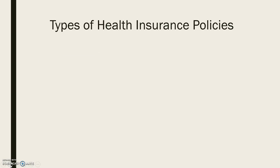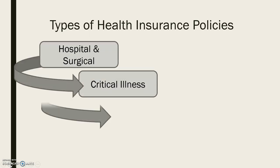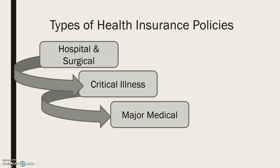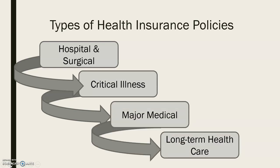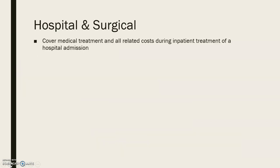The types of health insurance policy we have are: hospital and surgical, critical illness, major medical, as well as long-term health care. For hospital and surgical, it covers medical treatments and all related costs during inpatient treatments of a hospital admission.